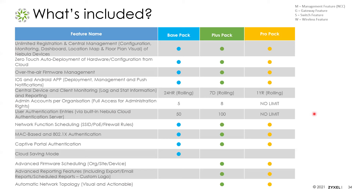The exception is dynamic pre-shared key (DPSK) — using DPSK requires Pro Pack and currently requires our cloud authentication. A feature release later this year should allow it to work with your own RADIUS server as well. All core settings — SSID settings, firewall rules, switch rules, MAC filtering, 802.1X authentication, and captive portal — are available in all versions of Nebula.